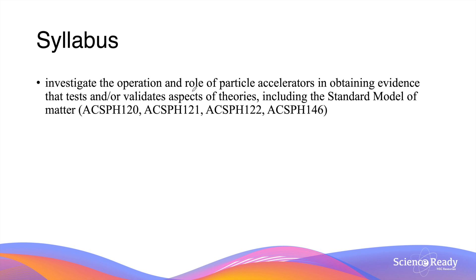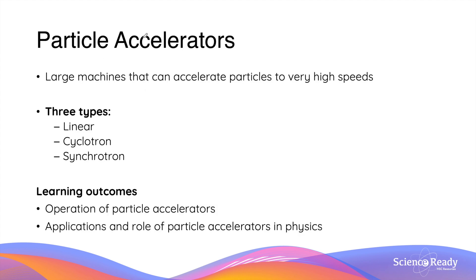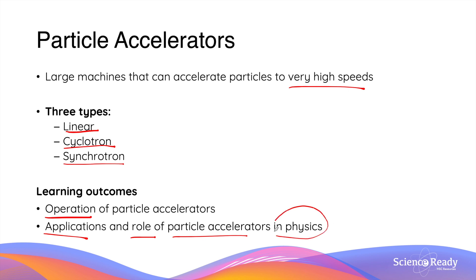Hey everyone, welcome to the video on particle accelerators. Particle accelerators are large machines that can accelerate particles to very high speed and therefore have very high kinetic energies. There are three types of particle accelerators we'll talk about in this video: linear accelerators, cyclotrons, and synchrotrons. The two key learning outcomes you want to constantly keep in mind as we go through the different types of particle accelerators are their operation — how they work — as well as the applications and role of these accelerators in the field of physics.